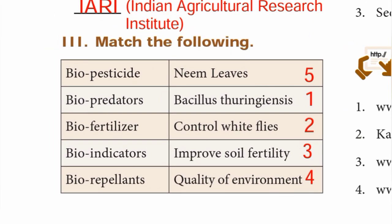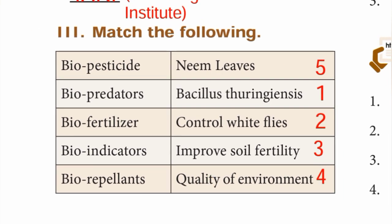Roman number 3: match the following. First one: biopesticide — Bacillus thuringiensis. Second: biopredators — control white flies. Third: biofertilizer — improve soil fertility. Fourth one: bioindicators — quality of environment. Number 5: bio-repellents — answer is neem leaves.